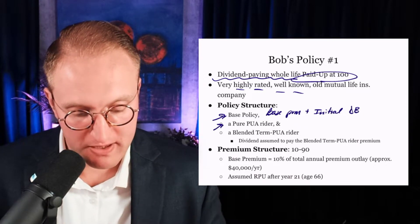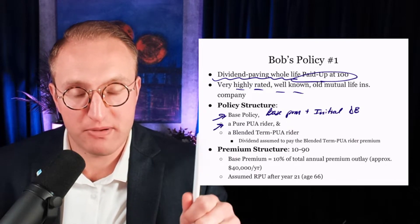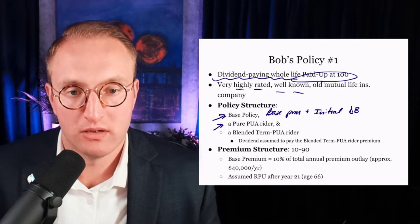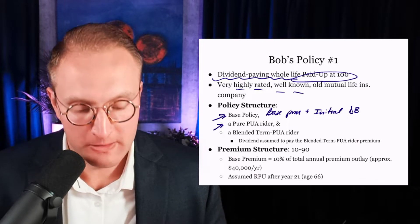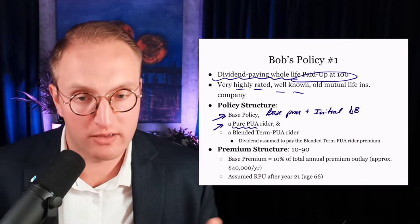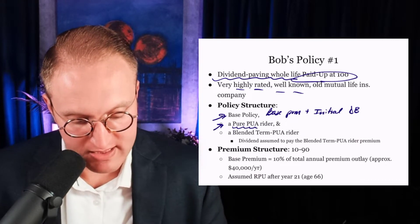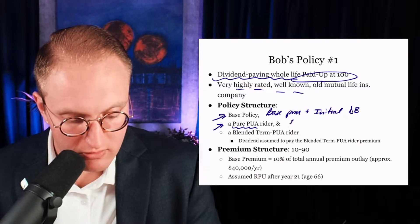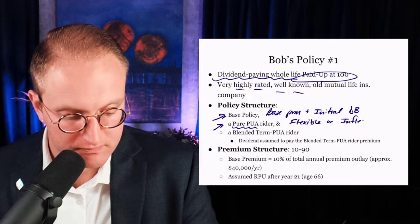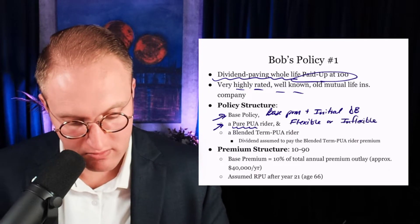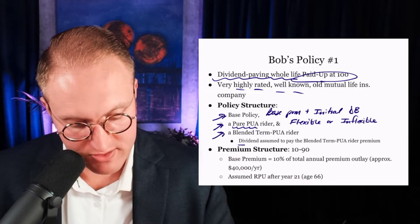For this policy, we added a pure PUA rider — meaning I pay a premium to this rider, it goes to the policy in PUA. There's an expense charge for all riders — a cost to all riders. What I mean by a pure PUA is that we're not including term or anything else — I'm just paying PUA premium. This is the thing that can be flexible or inflexible. We'll talk about what that means in this particular case.